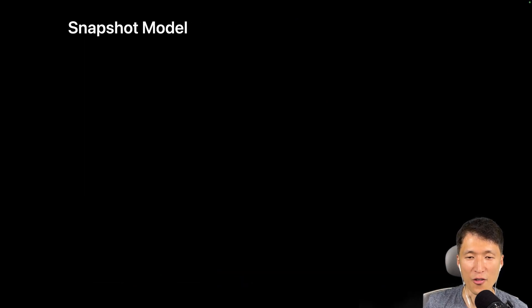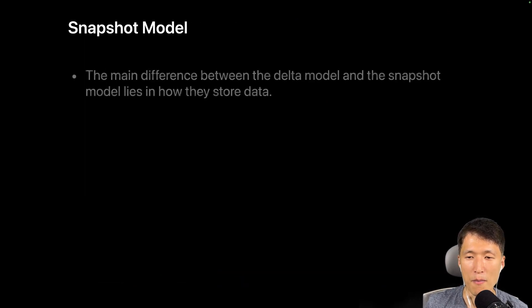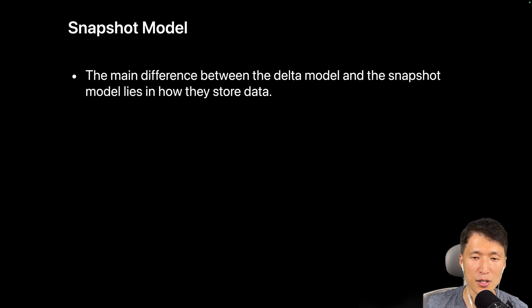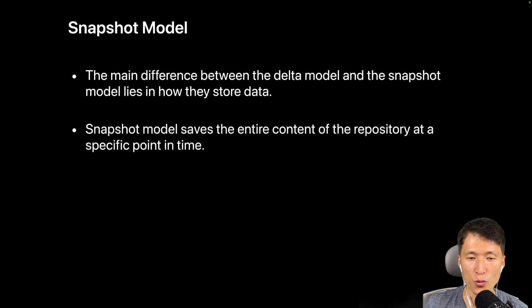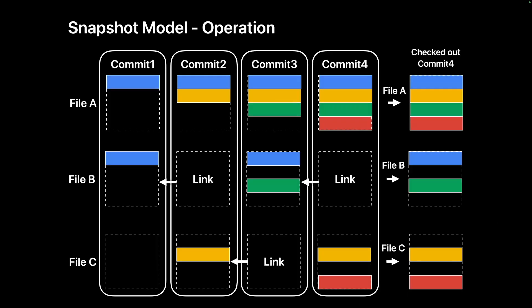The snapshot model addresses this drawback of the delta model. The main difference is how data is stored: while the delta model records only the differences when creating a new version, the snapshot model stores the entire content of the repository at a specific point in time. There are three files in the repository — A, B, and C — and four versions are stored.